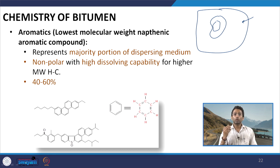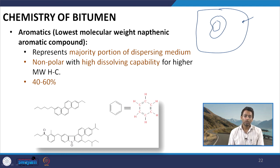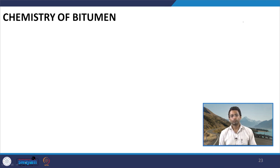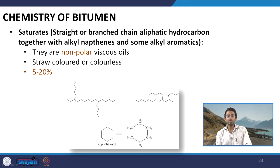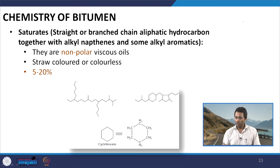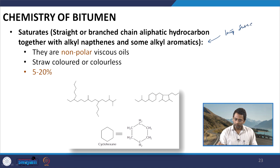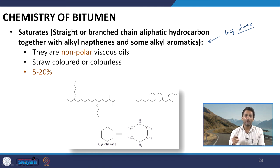Aromatics are mostly non-polar in nature and they have high dissolving capability for higher molecular weight hydrocarbons. The amount ranges from approximately 40 to 60 percent. Finally, we have saturates which are straight or branched chain aliphatic hydrocarbons together with alkyl naphthenes and some alkyl aromatics. They are not very desirable in the bitumen because they negatively affect the temperature susceptibility. They are non-polar viscous oils present in small quantities of approximately 5 to 20 percent and are mostly colourless.